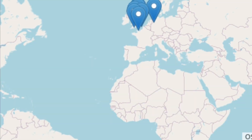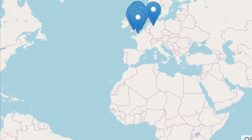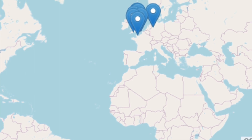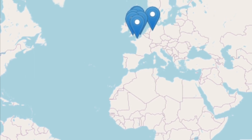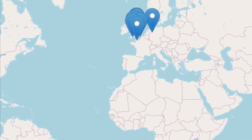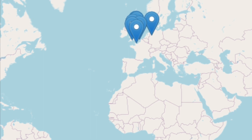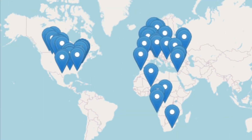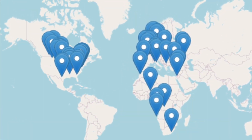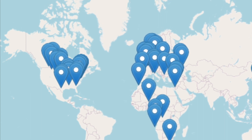They also lived in different parts of the world. Liopleurodon fossils have been found in northern Europe. By contrast, Mosasaurus fossils have been found worldwide.